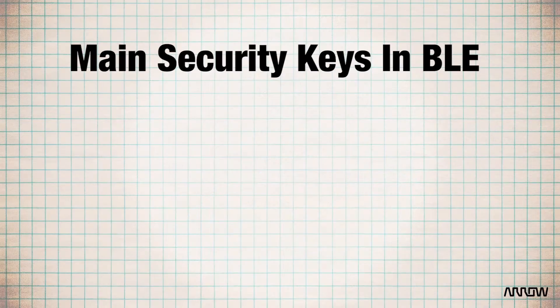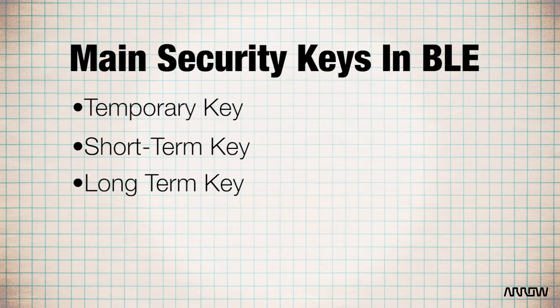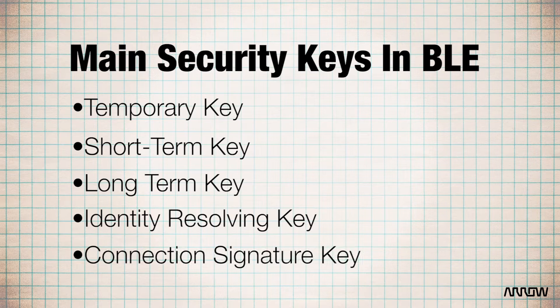BLE has five main keys: there's a temporary key, a short-term key, a long-term key, an identity resolving key, and a connection signature key.